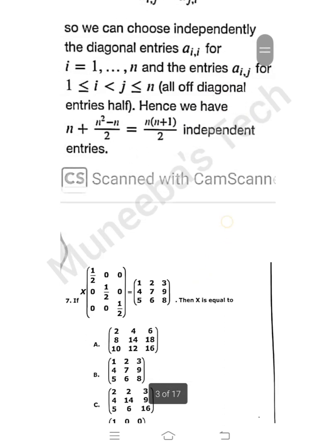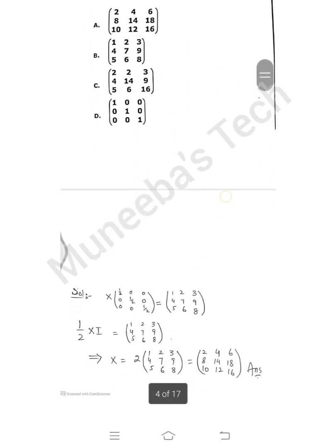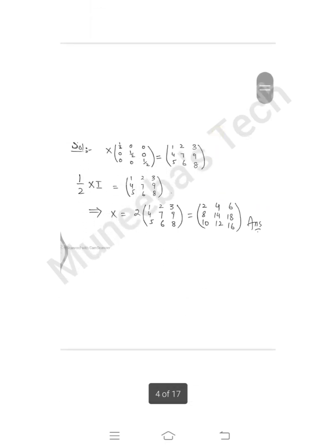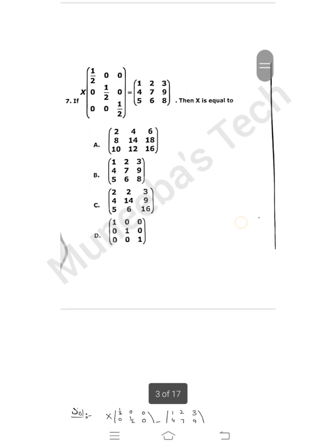Question number 7: If x times 1/2 equals the matrix [1,4,5; 2,7,6; 3,9,8], we have to find x. You just take 1/2 common from this matrix and get the identity matrix, so (1/2)x = this matrix. Therefore x equals 2 multiplied by this matrix. So answer A is the correct one.